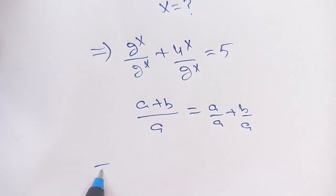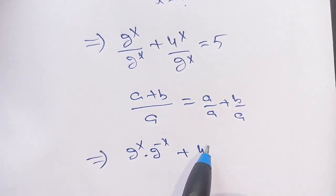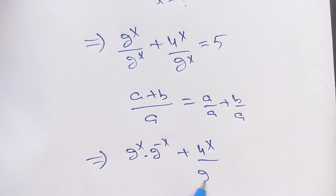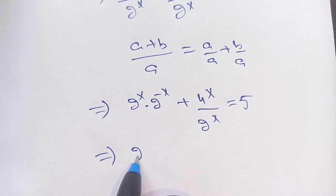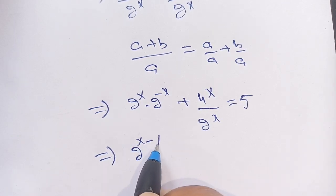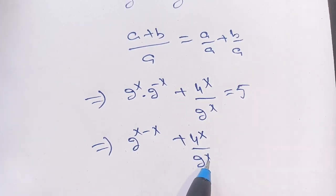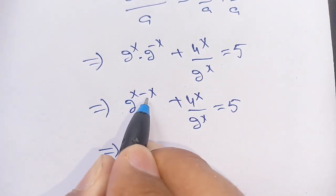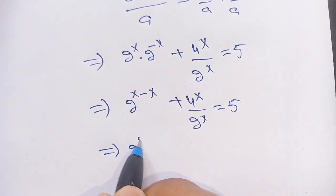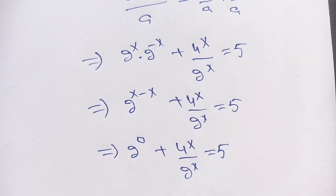Now in the next step, we can write it as 2^x times 2^(−x) plus 4^x divided by 2^x is equal to 5. This gives us 2^(x−x) plus 4^x divided by 2^x is equal to 5. Now 2^(x−x) becomes 2^0.